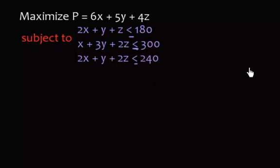Hello, welcome back to another problem on the simplex method. So this is another standard max problem. We are maximizing an objective function subjected to a bunch of linear inequalities with less than or equal to signs. Now here are all of our inequalities.